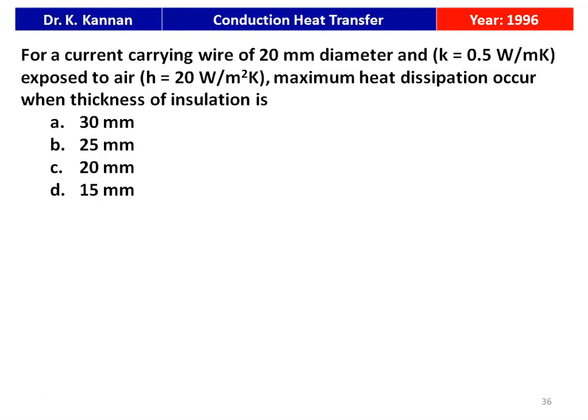The first question is from the 1996 question paper. For a current-carrying wire of 20 millimeter diameter with thermal conductivity 0.5 watts per meter Kelvin, exposed to air with heat transfer coefficient 20 watts per meter square Kelvin, maximum heat dissipation occurs when the thickness of insulation is — options: 30 mm, 25 mm, 20 mm, or 15 mm. We have to calculate the critical thickness of insulation.